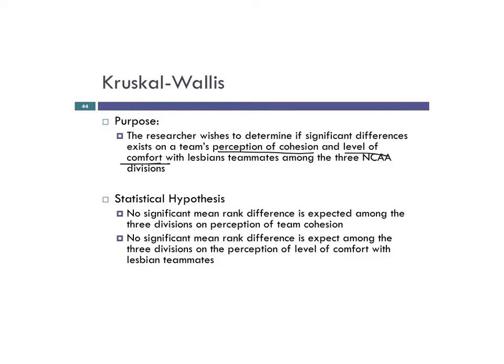So I have two statistical hypotheses: no significant mean rank differences expected amongst the three divisions on perception of team cohesion, and no significant mean rank differences expected among the three divisions on level of comfort with lesbian teammates. Notice how this differs from a t-test because we have three levels of our IV — Division I, Division II, and Division III. It's also independent groups because you can't be a Division I athlete and a Division II athlete.